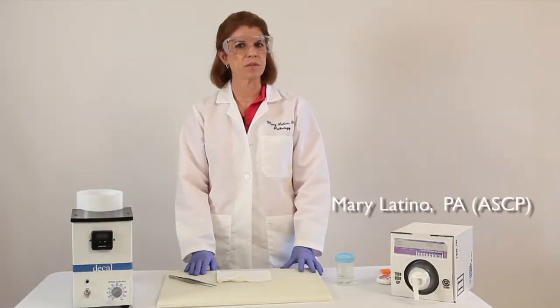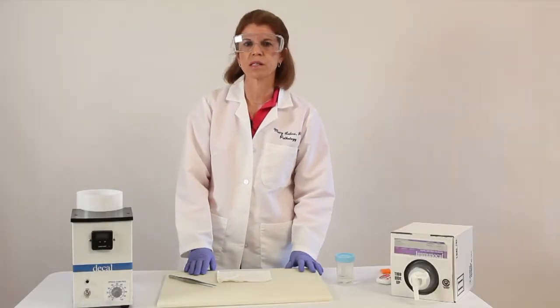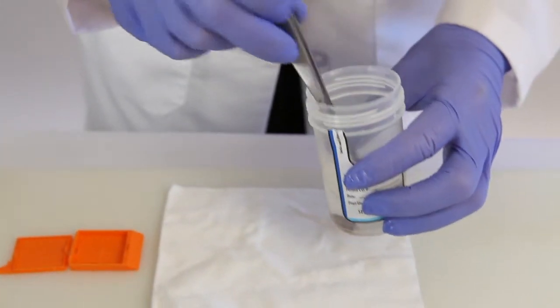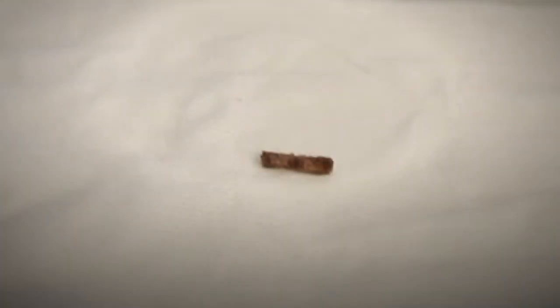I'm Mary Latino here with some tips for decalcifying a bone core specimen. As you can see they're typically cylindrically shaped like this one because they're taken from bone marrow using a needle.